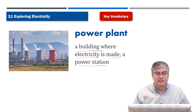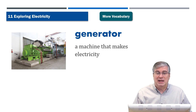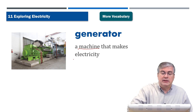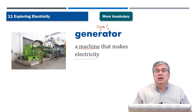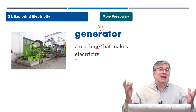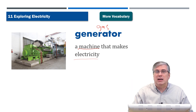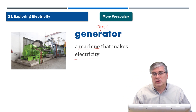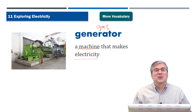A 'generator' is a machine that makes electricity. Sometimes people use a gas generator — they put in gas, like the gas you put in your car, to make electricity. This is useful in case of an accident or disaster where the power plant doesn't work or electricity is cut to a certain area. Some people have generators at home: they put gas in it and it produces electricity for their house.